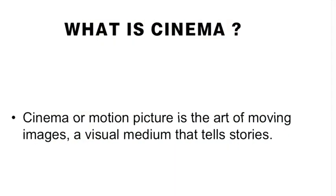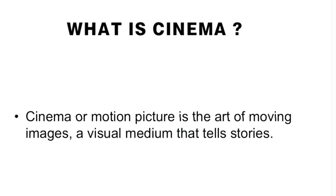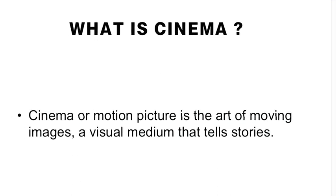Before starting, let's understand what a film is. The synonyms of film include cinema, moving pictures, and movie. Cinema is a motion picture — a combination of several images narrating a story. What we need to understand is how this story has been portrayed and how beautifully the images have been created. This is exactly what reading a film is all about.